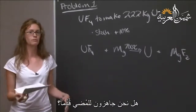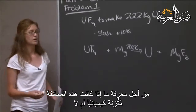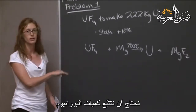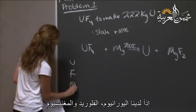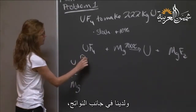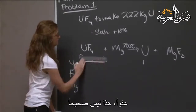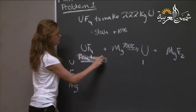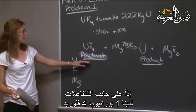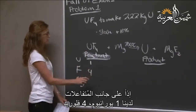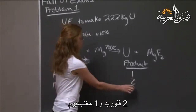Now that we have this equation, are we ready to move on? No — we need mass conservation. We need to balance this equation. To determine if it's balanced, we want to track the amount of uranium, fluoride, and magnesium on each side. On the reactant side, we have one uranium, four fluoride, and one magnesium. On the product side, we have one uranium, two fluoride, and one magnesium.